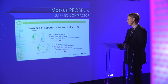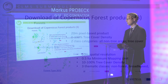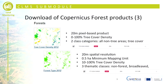The forest type product is also based on 20 meter satellite data but has a minimum mapping unit of half a hectare. This will change in the future to 20 meter resolution only. It covers a range of 10 to 100 percent tree cover density conforming to the FAO forest definition, and has three thematic classes: non-forest, broadleaved forest, and coniferous forest.